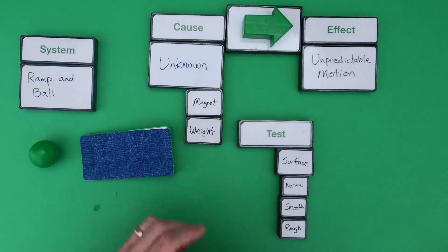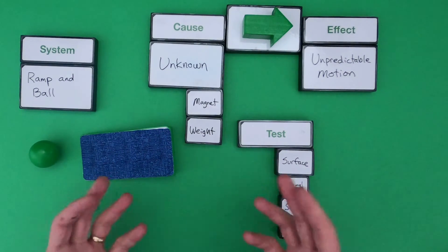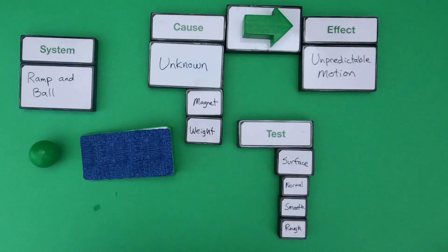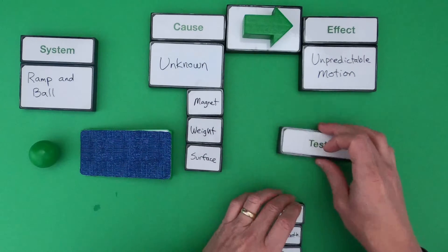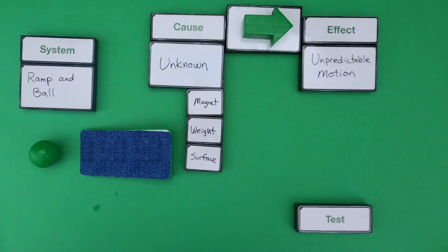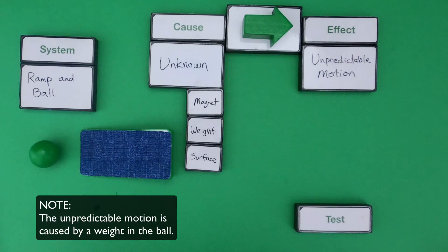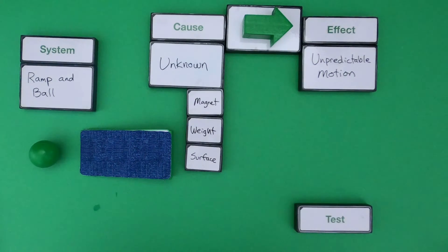And we're keeping the other things consistent. We wouldn't want to add a magnet and a weight and do all of those things at once, because it won't tell us which of these possible causes is actually responsible for that unpredictable motion. So this is how I would organize the first system. What I'm going to do is set up the second system and we're going to let you give it a try.